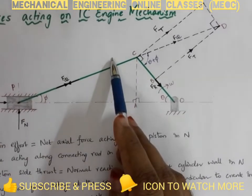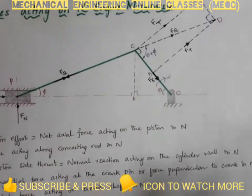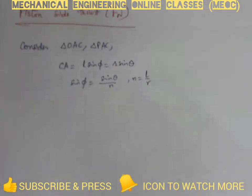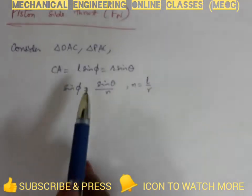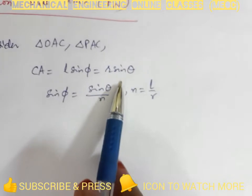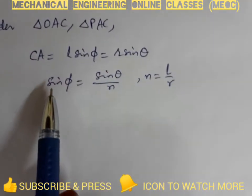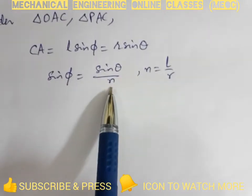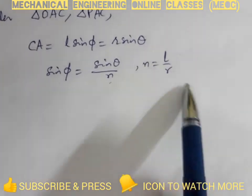We have CA as L sine phi equal to R sine theta, from which we can write sine phi as sine theta by n, where n is the obliquity ratio L by R.